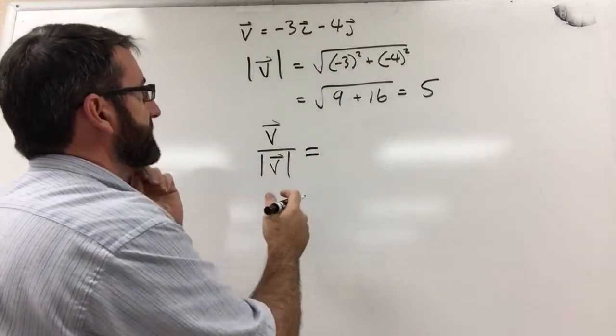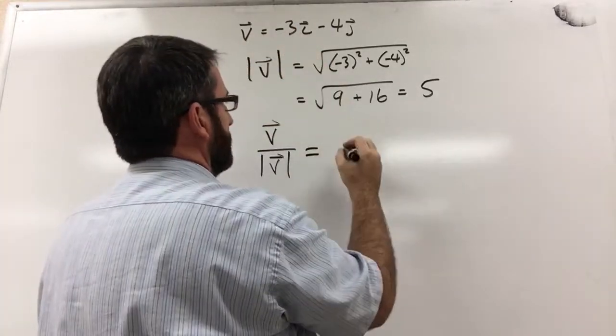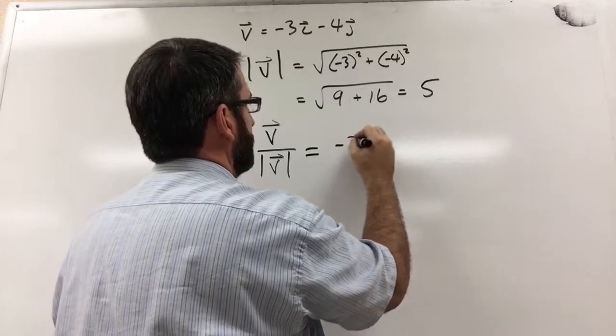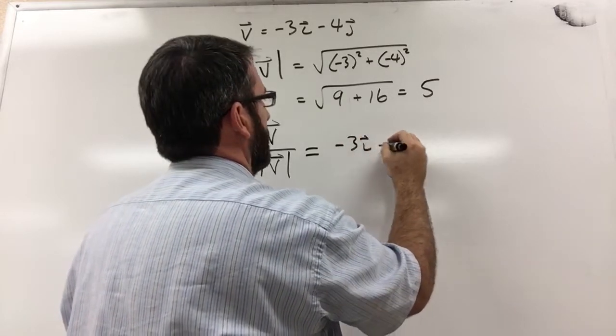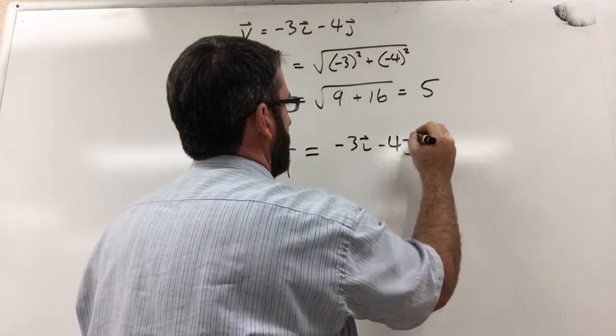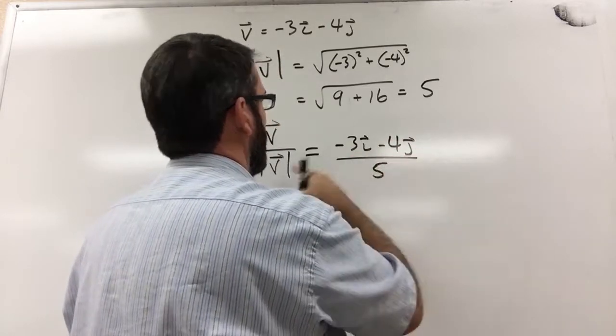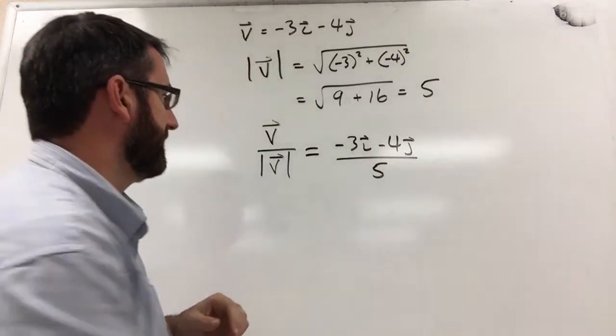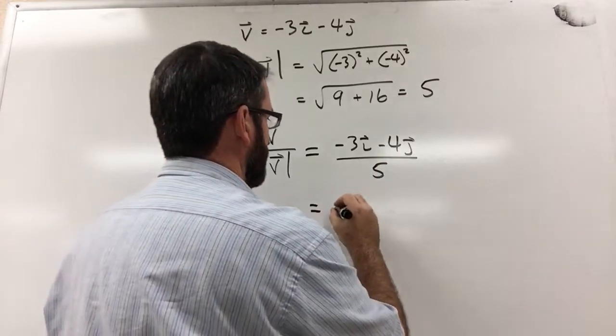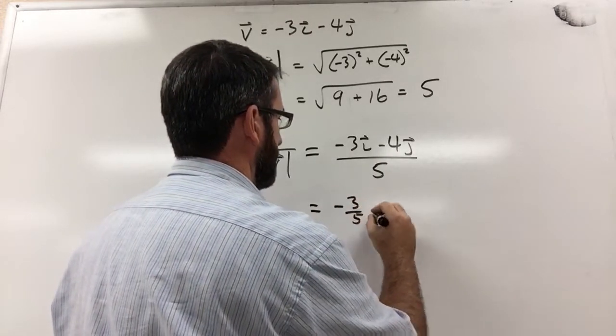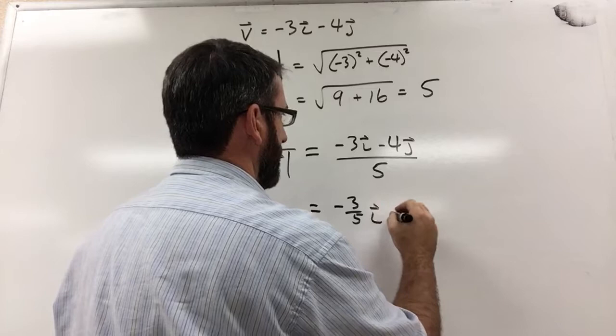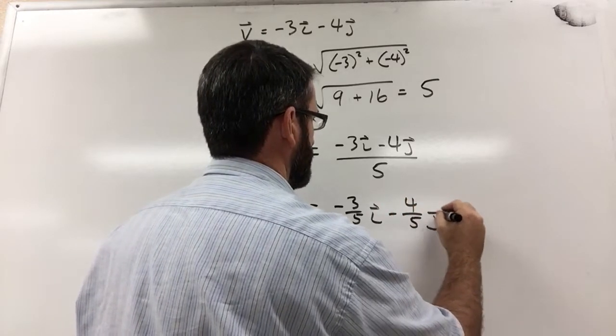All right, so the direction is just going to be this vector v, negative 3i minus 4j. And we're going to divide that by our magnitude, which is 5. So that's going to be equal to negative 3 fifths i minus 4 fifths j.